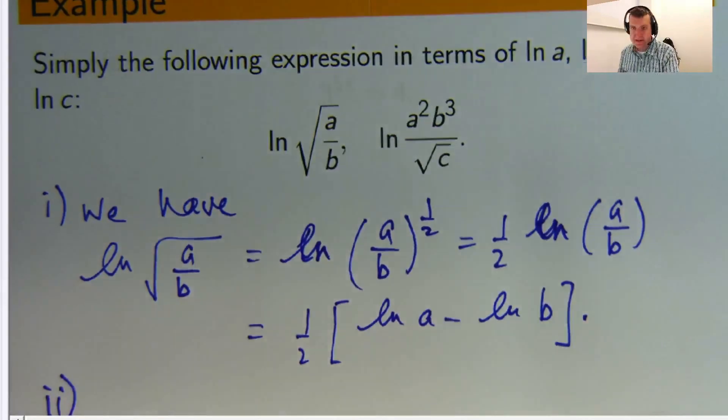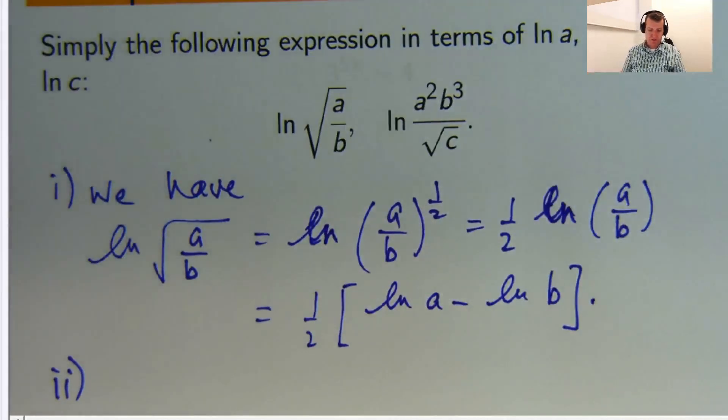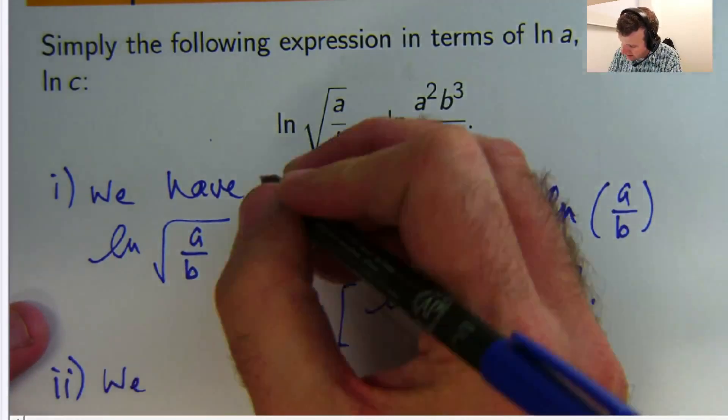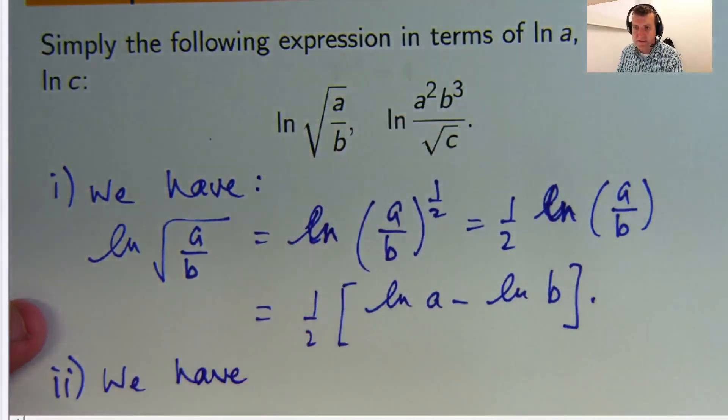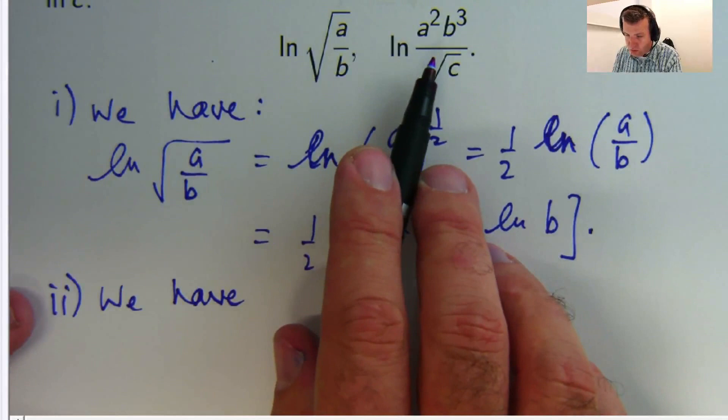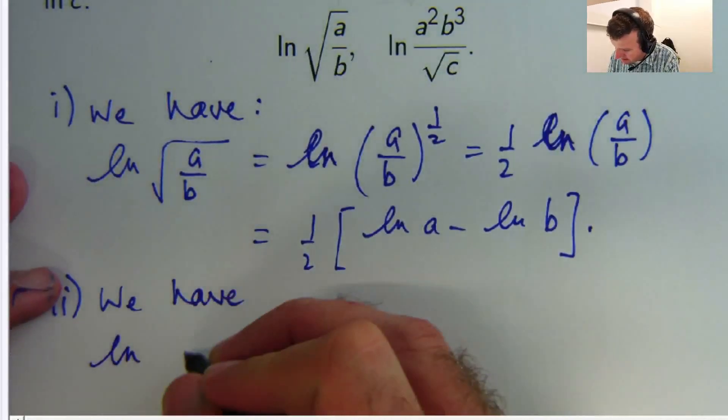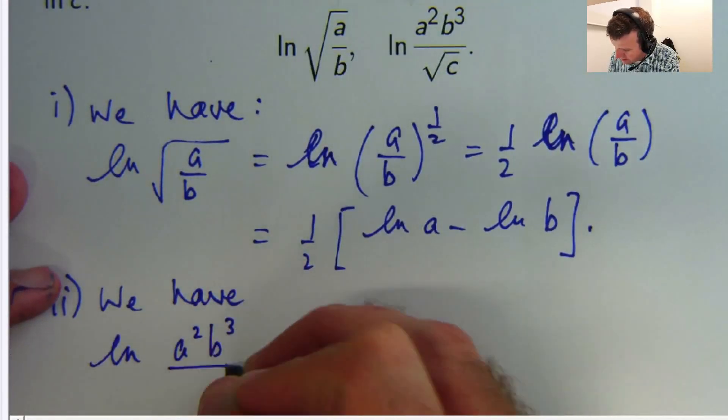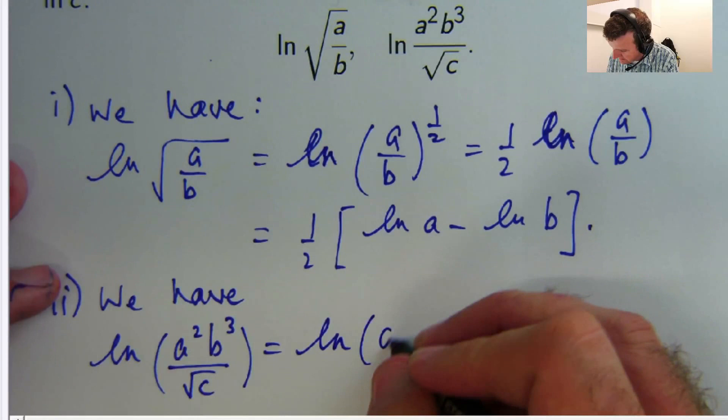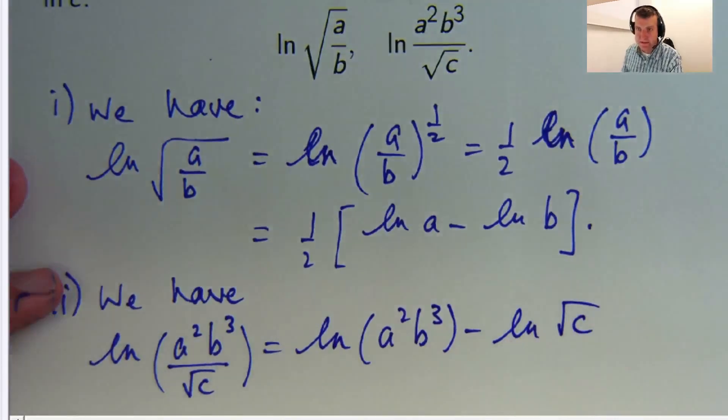Part two. Simplify this in terms of log a, log b, and log c. They're all natural logs. So, here, I've got a quotient. Let's use our quotient to difference law.